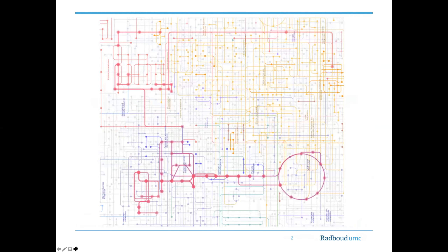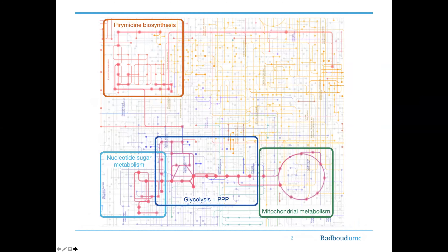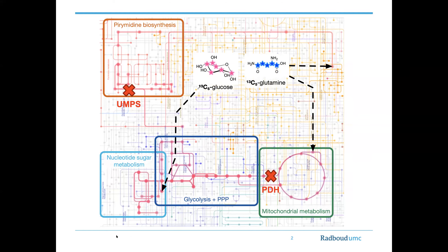This is a typical slide about metabolism from KEGG, showing that metabolism in living cells is complex — there are a lot of nodes which are metabolites, and reactions catalyzed by enzymes. You can cluster this into aspects like mitochondrial metabolism, nucleotide biosynthesis, or glycolysis. Sometimes the genes encoding enzymes facilitating these reactions will have defects, like UMP synthase or pyruvate dehydrogenase, and the patient suffers a phenotype.